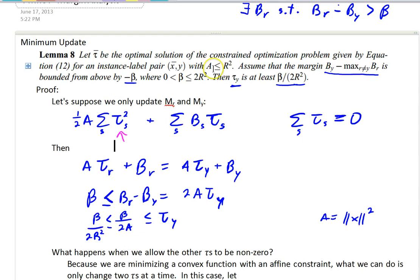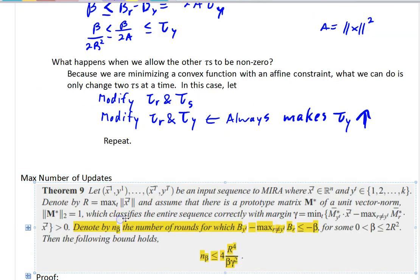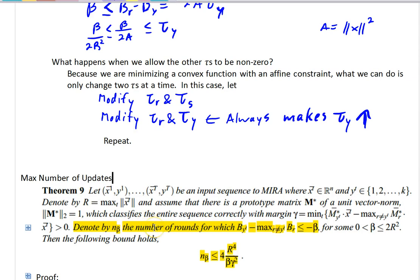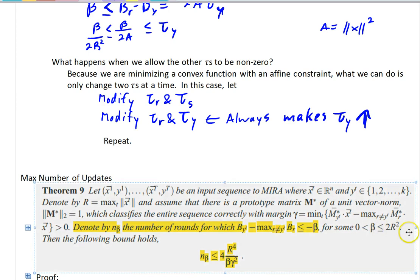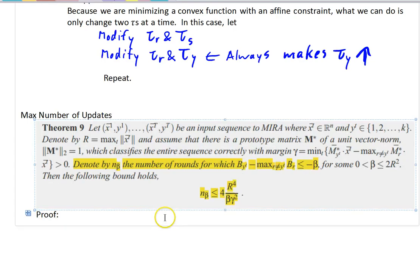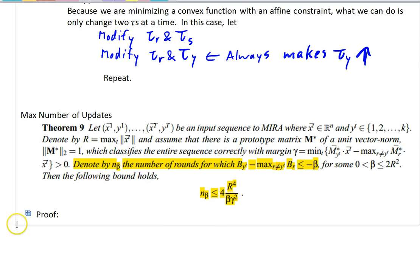All right, so now we know that the max number of updates, or sorry, the size of the update is at least beta over 2r squared. So now we've got some beta, a gain between 0 and 2r squared, and they get this result. So a limited number, sorry, this is the number of rounds in which this difference is bigger than beta, basically.